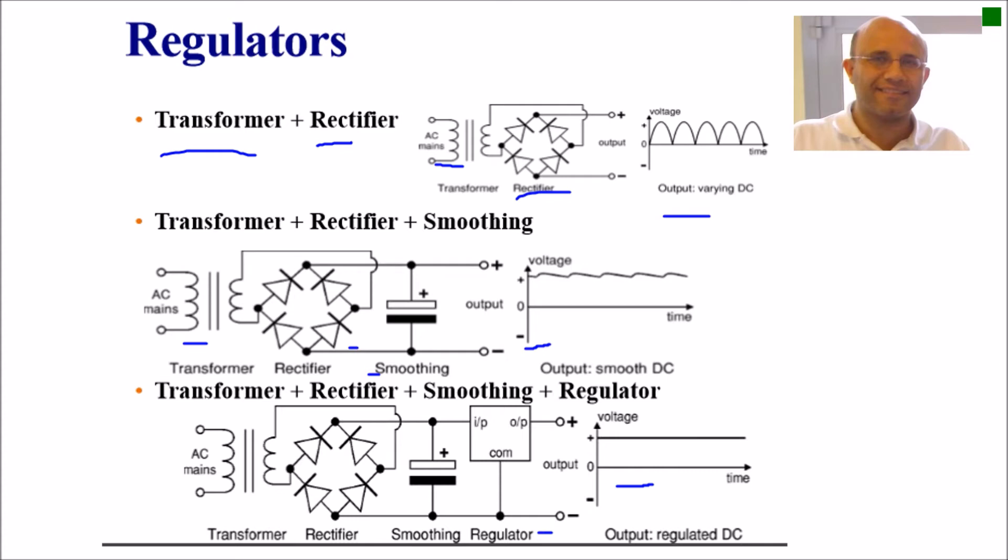Then transformer and rectifier. Here we add a filter smoothing circuit, which is the filter, this one, and the output will be like this.